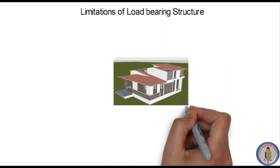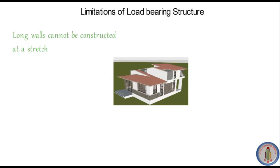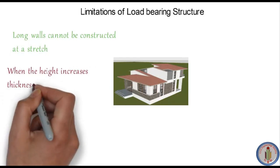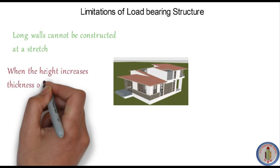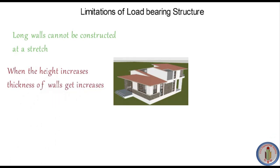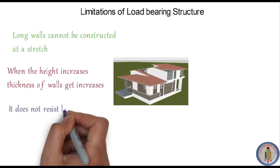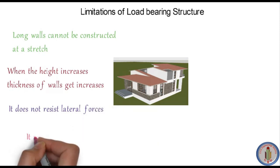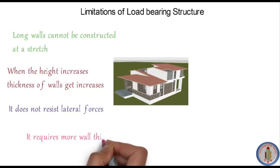Compared to frame structure, load bearing structure has many limitations. Long walls cannot be constructed at a stretch, whereas in frame structure, long walls can be built using columns and beams. As height increases, wall thickness also increases since walls are the major load bearing element. It does not resist lateral forces and requires more wall thickness, which reduces room space — unlike frame structure where columns carry loads and wall thickness can be minimal.